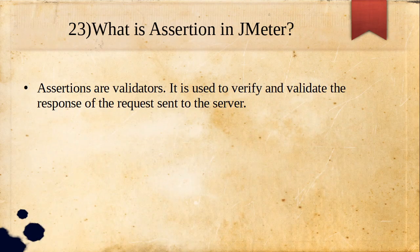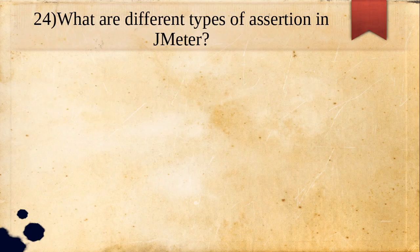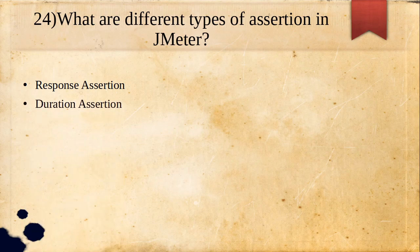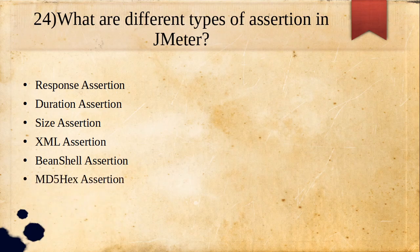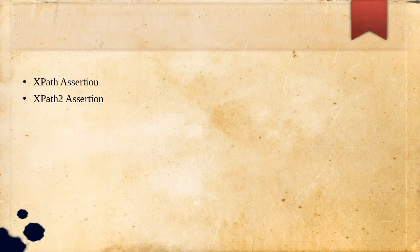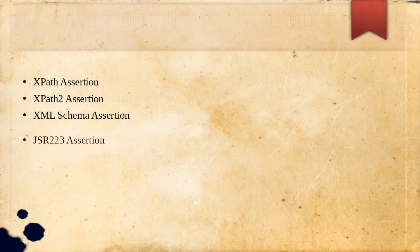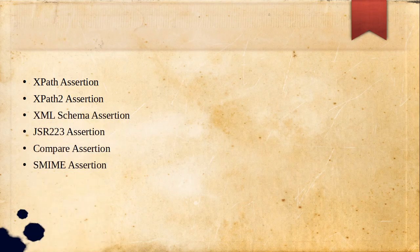What is an assertion in JMeter? Assertions are validators — they are used to verify and validate the response of requests sent to the server. Different types of assertions in JMeter include: Response Assertion, Duration Assertion, Size Assertion, XML Assertion, BeanShell Assertion, MD5Hex Assertion, HTML Assertion, XPath Assertion, XPath2 Assertion, XML Schema Assertion, JSR223 Assertion, and Compare Assertion.